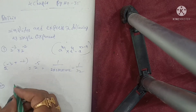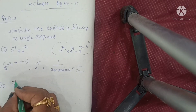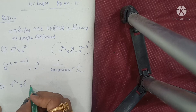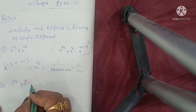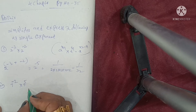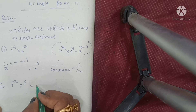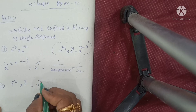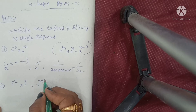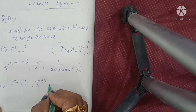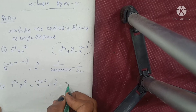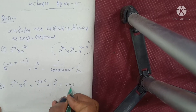Next, second question: 7 power of minus 2 into 7 power of minus 5. It is equal to 7 power of minus 2 plus minus 5, which is 7 power of minus 7. It is equal to 343. Simple.